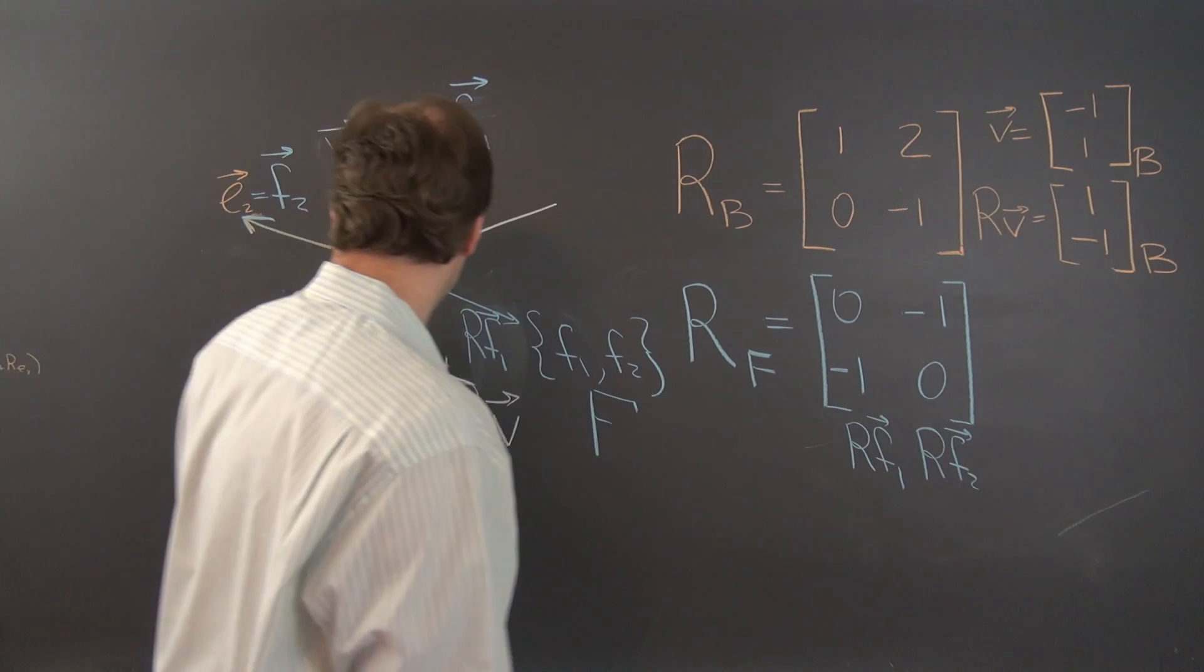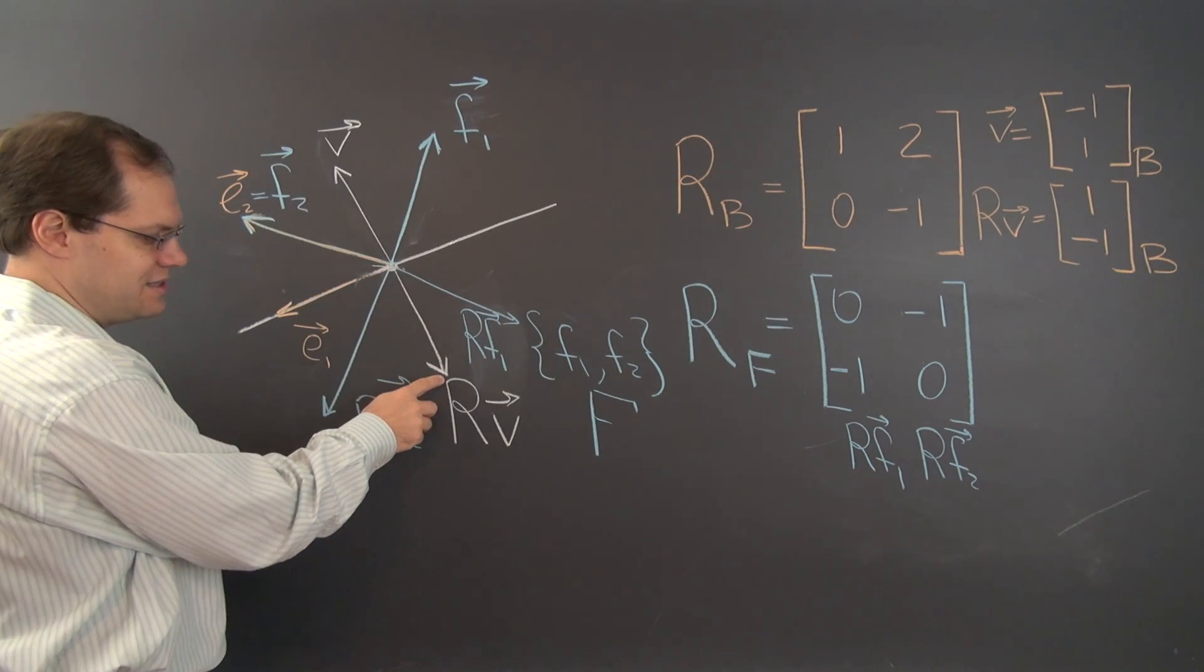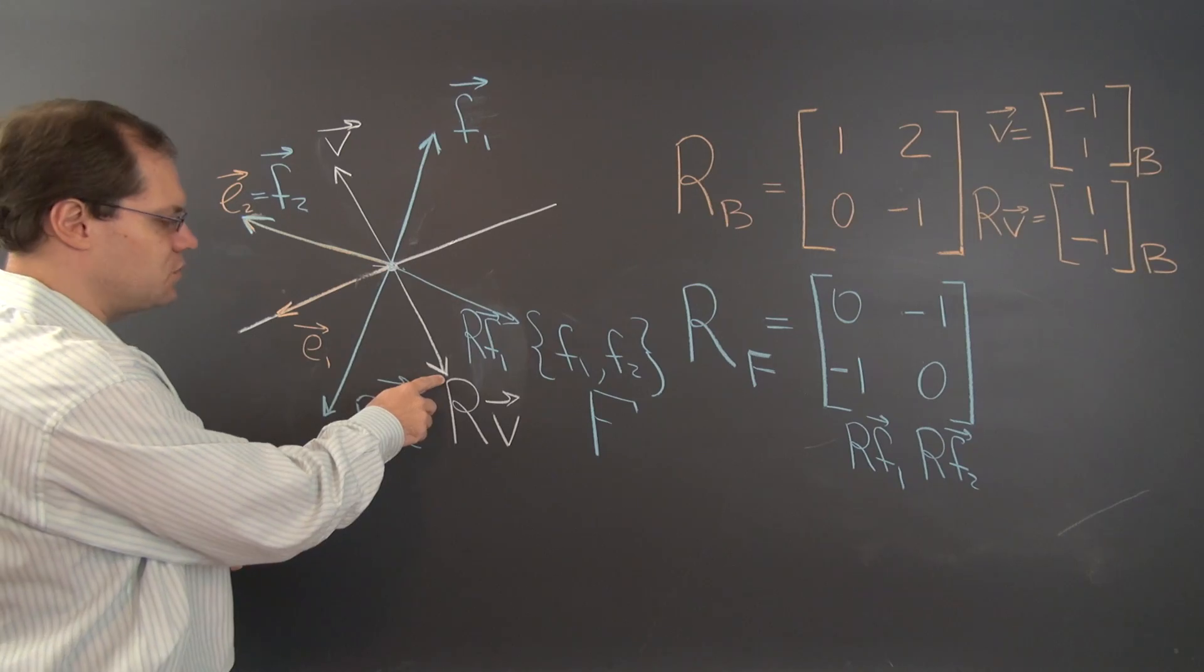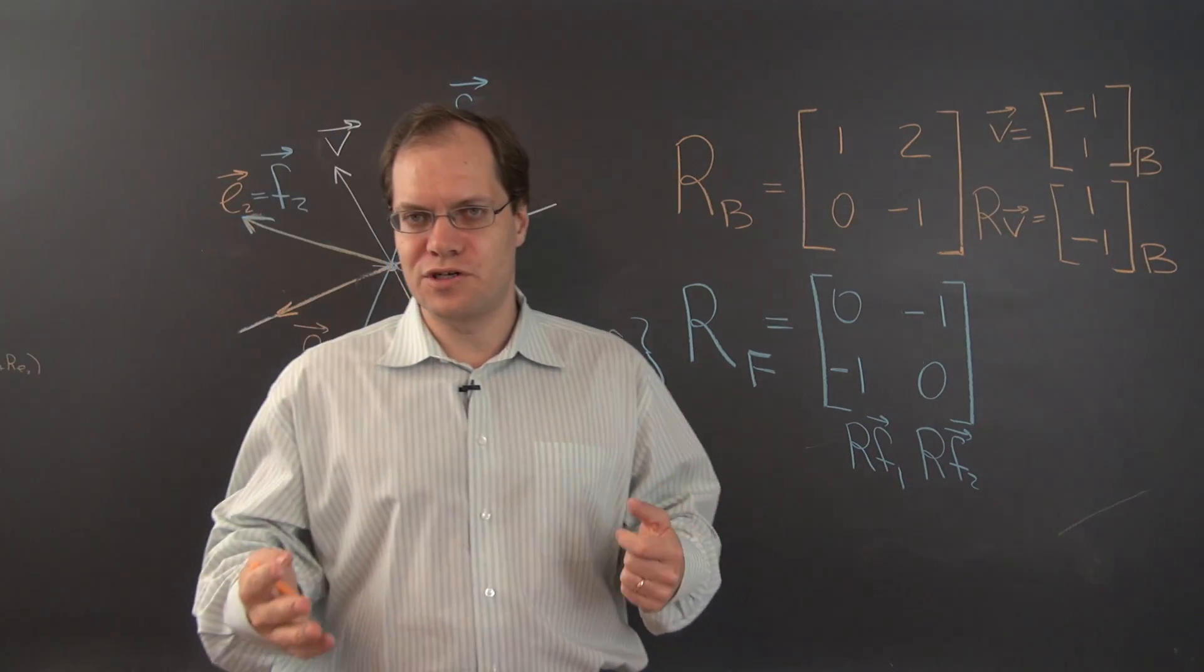And of course it was 1 and negative 1. And of course with respect to the original basis, it does represent this vector. The coefficients 1, negative 1 represent this vector, so everything worked great.